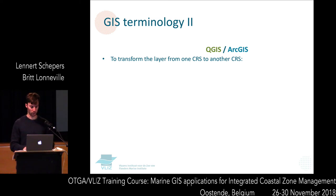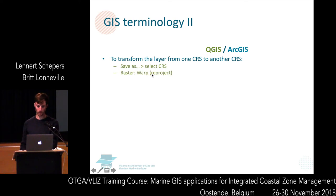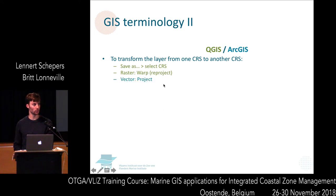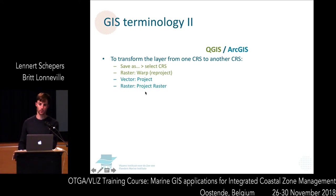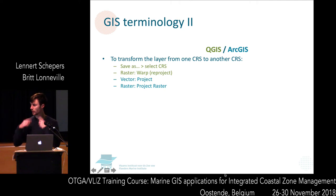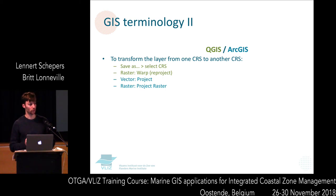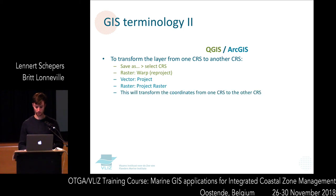To transform coordinates from one CRS to another: in QGIS you save the layer and select the target CRS; for raster there is a separate tool called warp or reproject. In ArcGIS it's called 'project' for vector layers and 'project raster' for raster layers. The terminology differs, so it's always good to think about what you want to do and check the software help to make sure you are doing the right action.